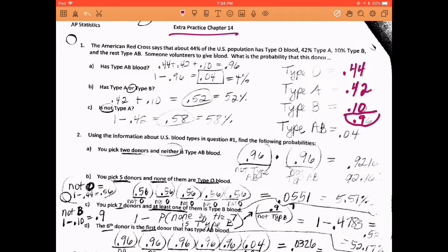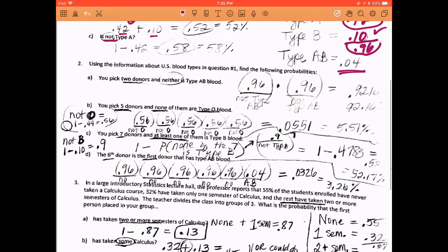I went ahead and added together those top three to get 0.96. So I could answer question A, which says how many have type AB. Well, that is 1 minus 0.96. Question B, type A or, which is addition, type B. So I added together type A and type B. And C, you do not have type A. Well, since 42% is type A, everything else is 58%.